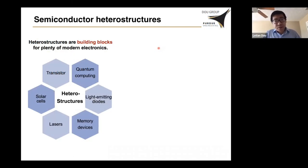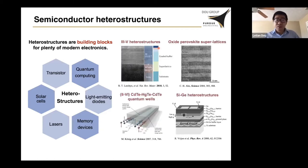As we know, semiconductor heterostructures are a key building block in modern electronics and optoelectronics. The controlled growth of high-quality heterostructures and interfaces is critically important for achieving high device performance. Such high-quality interfaces have been realized in many material systems, such as group 3-5, 2-6, group 4 semiconductors, as well as oxide-based wide-bandgap materials.